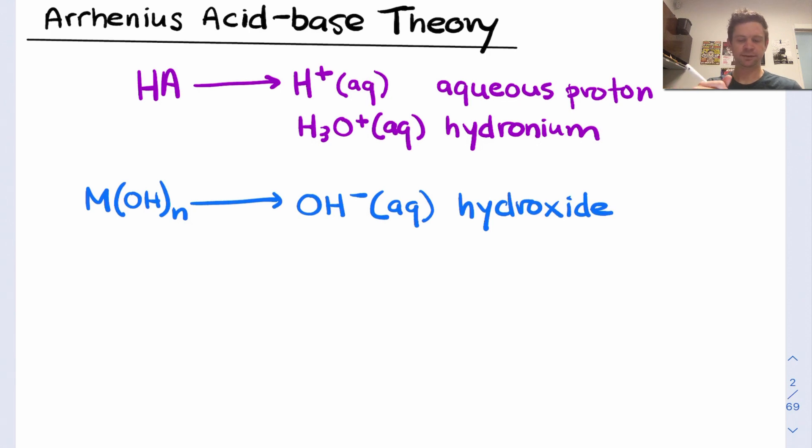But there's another way this can happen, and this is common for amine bases like ammonia, NH3. Reaction with water can also produce hydroxide ion. The idea here is there's a transfer of a proton from H2O to the base, creating hydroxide, OH-.